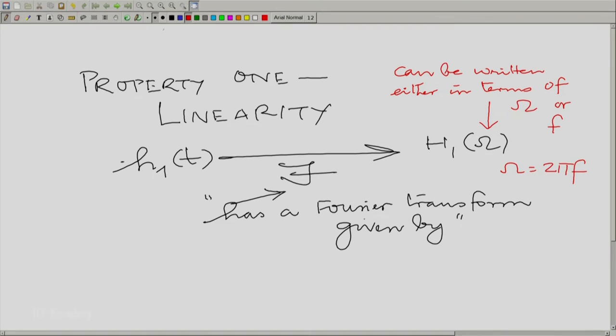Either way, we would have the same properties. The properties do not change essentially. Let H1(t) have the Fourier transform H2(omega).